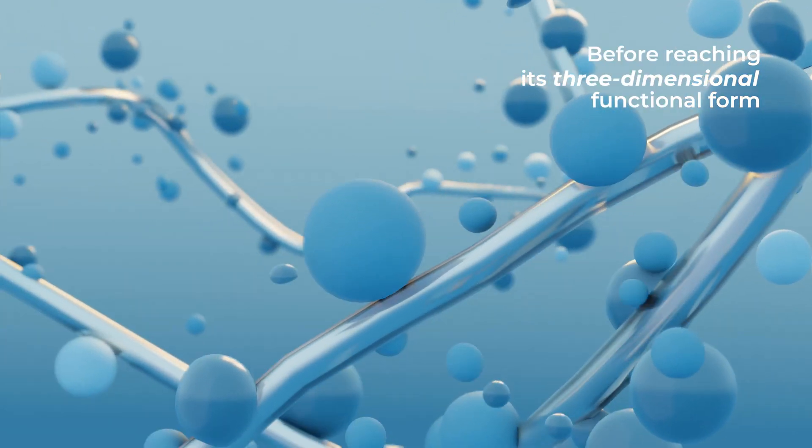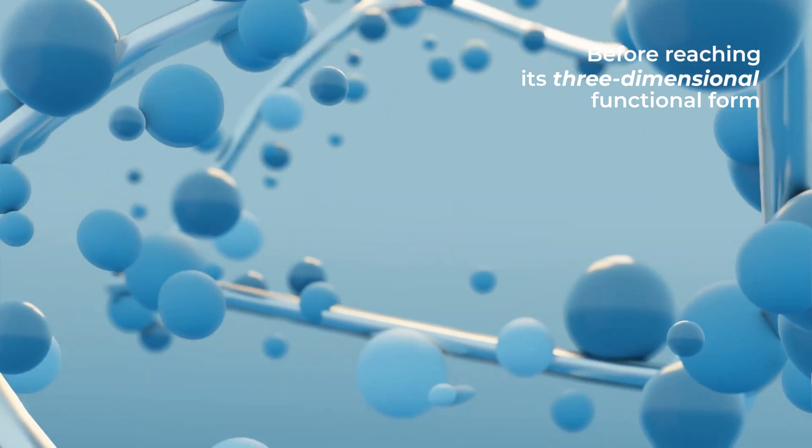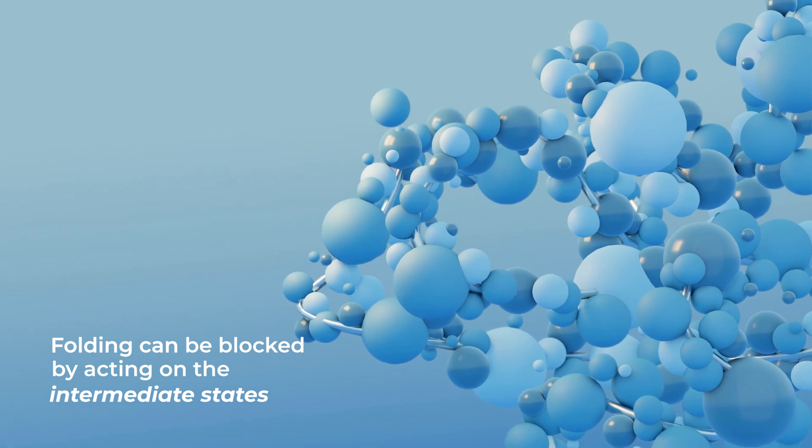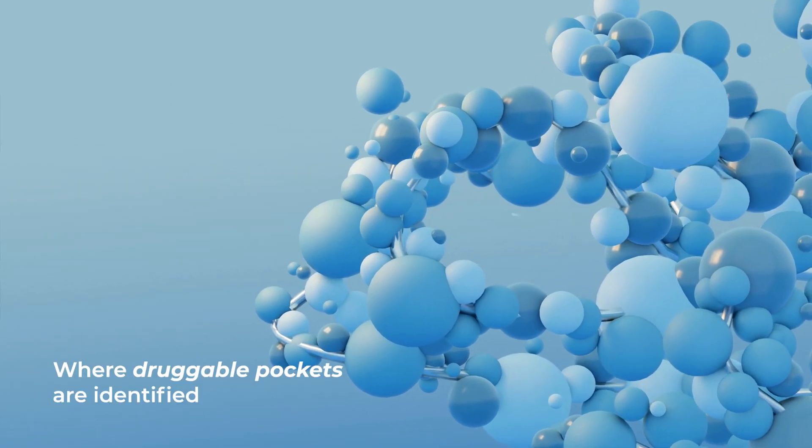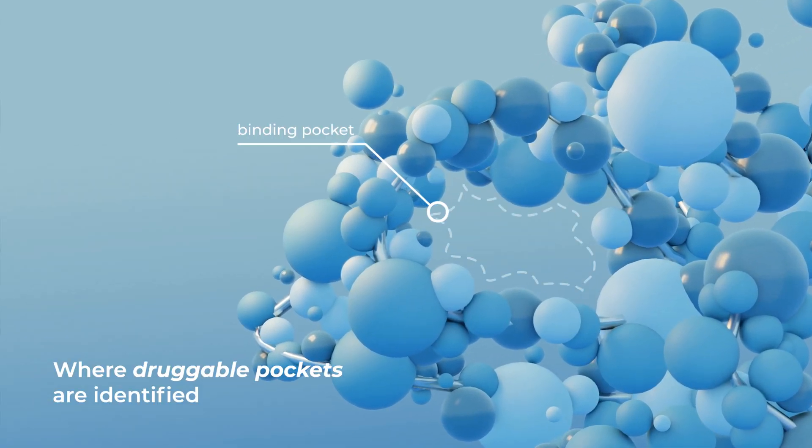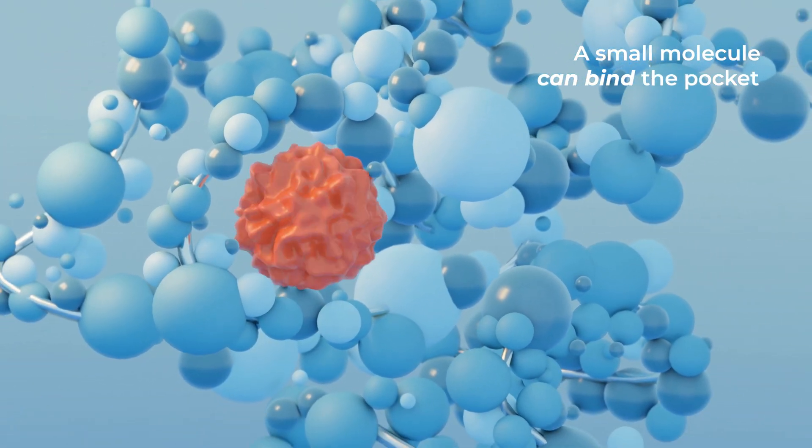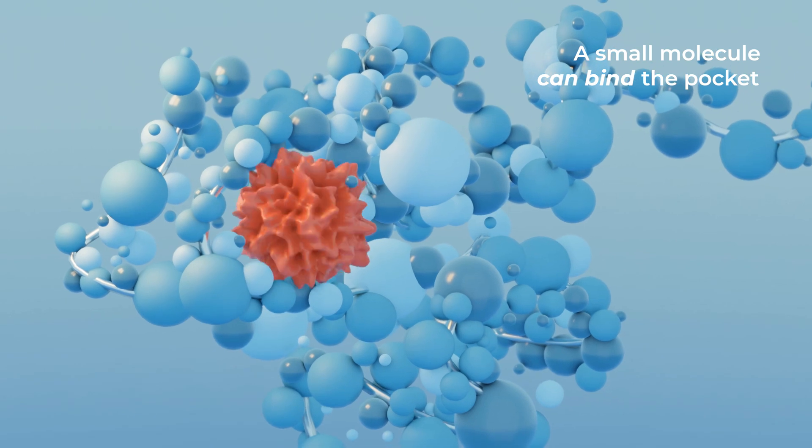Before reaching the final three-dimensional form that determines the function of the protein, folding can be blocked by acting on the intermediate states. In these conformations, druggable pockets can be identified. A small molecule can bind the pocket and interfere with the proper sequence of folding steps.